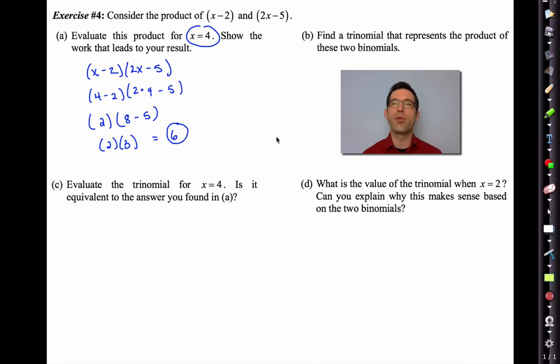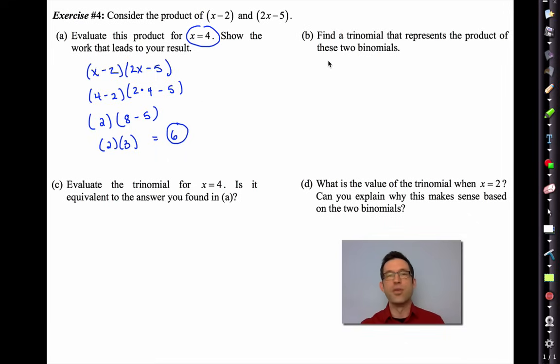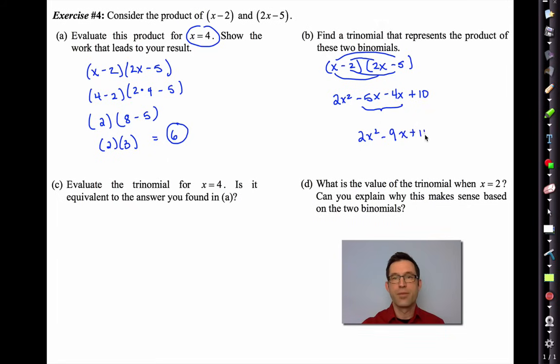Now letter B, find a trinomial that represents the product of these two binomials. We can do this using area. We can do it using foiling. We can do it using double distribution. I think I'll just do some foiling. First, outer, inner, and last. Notice how we always have these kind of combining-like terms. 2x² - 9x + 10.